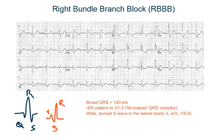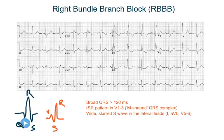Next is right bundle branch block. Normally in an ECG, after the P wave there is a negative or downward deflection which is the Q wave. After the Q wave, there is a positive or upward deflection which is the R wave, and then a second negative deflection which is the S wave. The terminology is that upward deflections are called R waves, the negative wave before the R wave is the Q wave, and the negative wave after the R wave is the S wave.